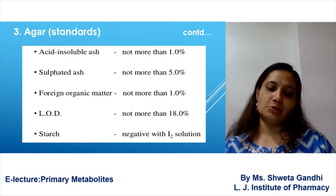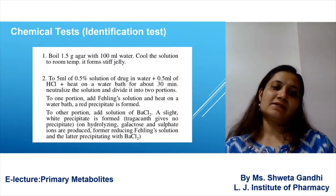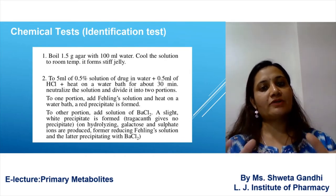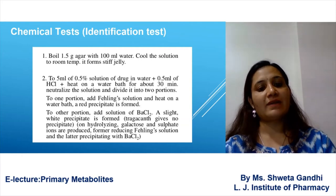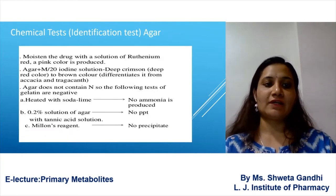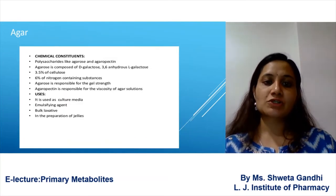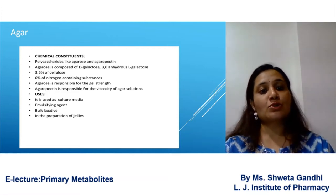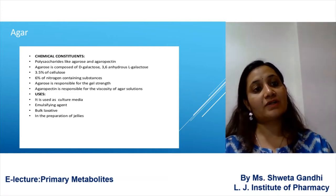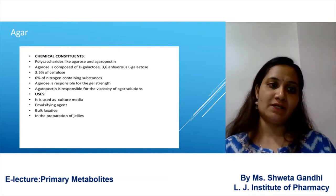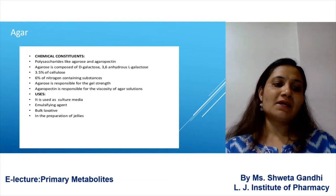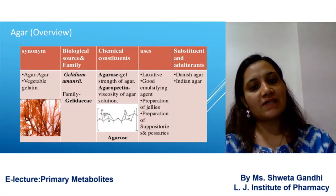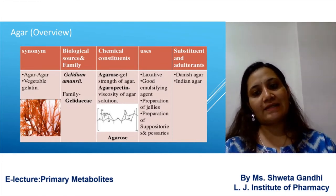For the chemical test of agar, on cooling at room temperature it should form a jelly. The chemical constituent is polysaccharides like agarose and agaropectin; it should also contain bigalactose. The major uses of agar are in plant tissue culture for culture media, as an emulsifying agent, bulk laxative, and in the form of jellies. Different types include Indian agar and Danish agar.